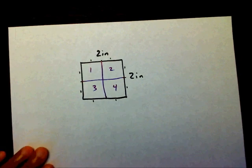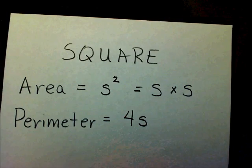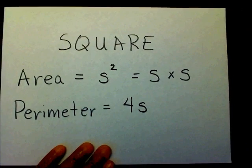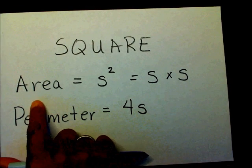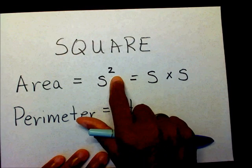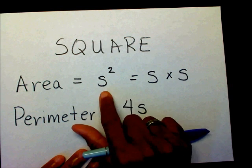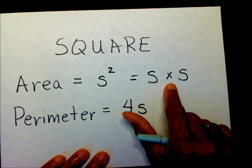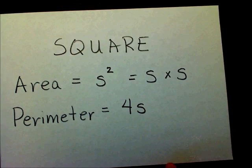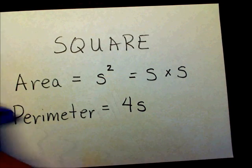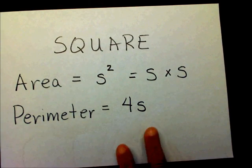And in order to do that, we're going to use a formula. And this formula that we're going to use today is s squared, which is side squared, or we can use side times side, which means side squared. So let's get started.